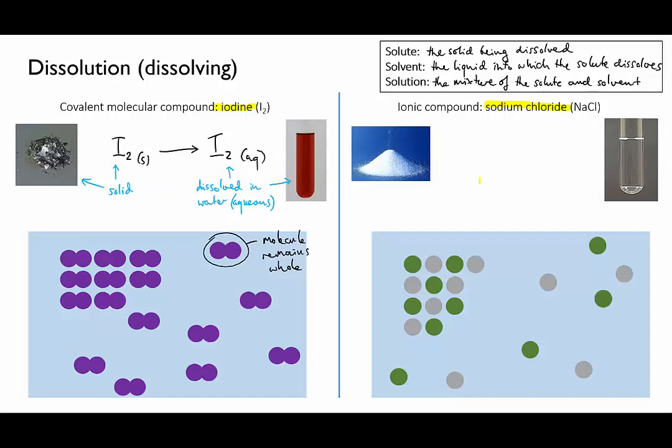As with the iodine, we can represent this on a symbolic level using an ordinary chemical equation like this. However, in this case the formula NaCl no longer accurately represents the physical form of the aqueous compound, since it implies that the sodium ions and the chloride ions are still bonded together.